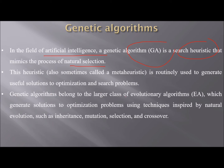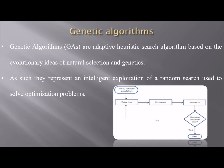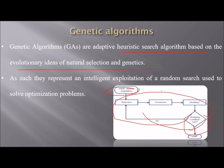Genetic algorithms belong to the larger class of evolutionary algorithms, which generate solutions to optimization problems using techniques inspired by natural evolution — such as inheritance, mutation, selection, and crossover. Within a GA, adaptive heuristic search algorithms based on evolutionary ideas follow a cycle: initial random population, then selection, then crossover, then mutation, then checking stopping conditions. If conditions are met, the process ends; otherwise it repeats. This represents intelligent exploitation of random search to solve optimization problems.